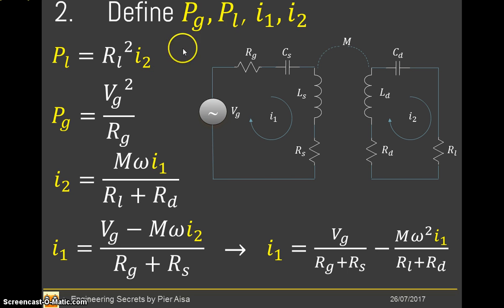At the first step, we will define PG, that is the power delivered by the generator, PL, that is the power received on the load RL, and i1 and i2, that are the currents respectively in the first source circuit and in the device circuit. So PL, that is the power of the load, is defined as RL times i2 squared, that is the resistance times the square of the current. PG, that is the power delivered by the generator, is the square of its voltage divided by its series resistor RG.